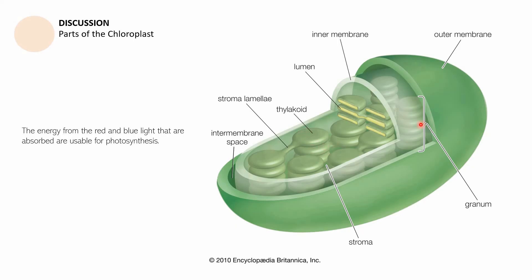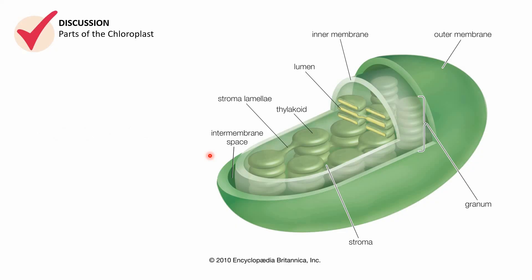So, chloroplast — the green and yellow light are not used by chlorophyll; instead, chlorophyll reflects them back towards the outer environment, which is why we see plants as green or yellow. The energy that chlorophyll uses comes from red and blue light, because those are the usable wavelengths for photosynthesis.